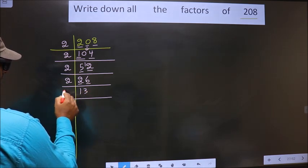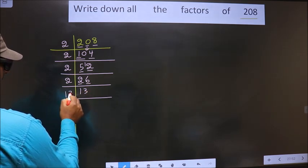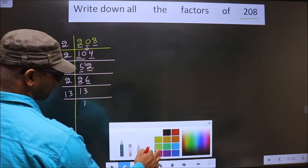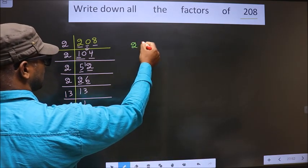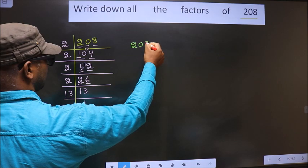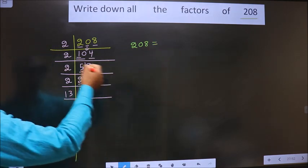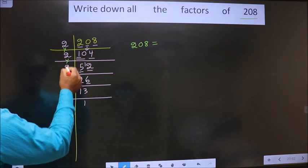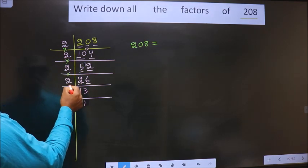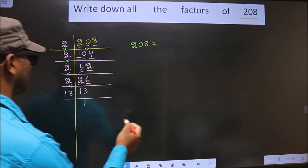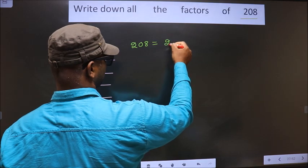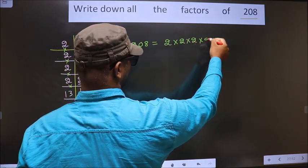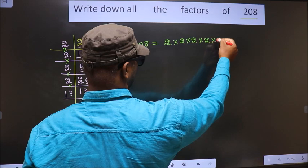Now we got 13. 13 is a prime number, so we take 13 once — 13. So now 208 is equal to the product of these numbers, that is 2 × 2 × 2 × 2 × 2 × 13.